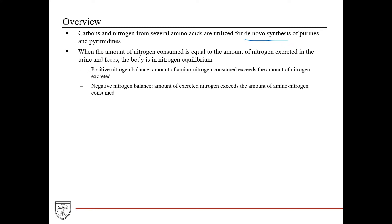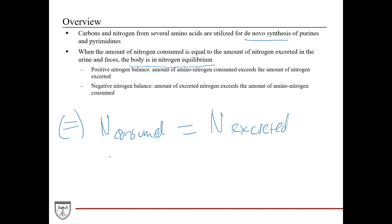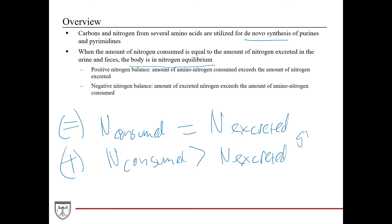Nitrogen balance refers to the relationship between nitrogen consumed and nitrogen excreted in the urine and feces. When the two are equal, the body is in nitrogen equilibrium. Positive nitrogen balance occurs when the amount of nitrogen consumed is greater than the amount excreted. Examples include periods of growth, where many anabolic processes are occurring, hypothyroidism, tissue repair, and pregnancy.